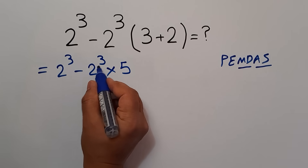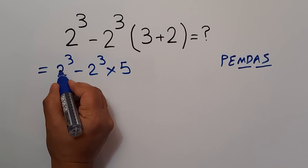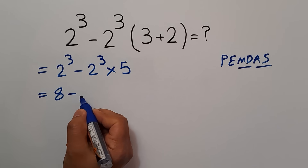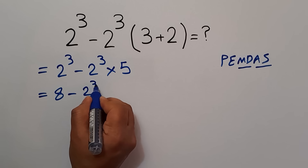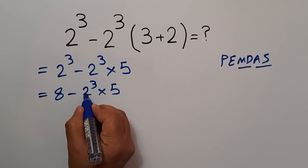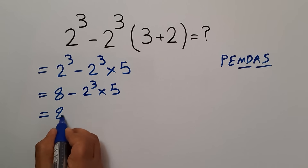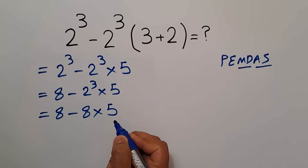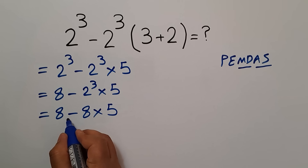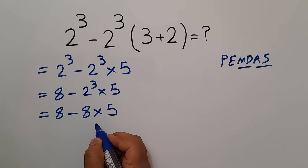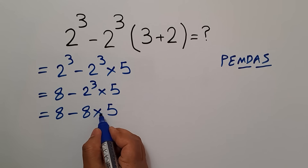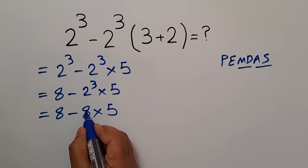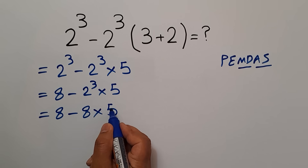In this expression we have 2 exponents, 1 subtraction, and 1 multiplication. According to PEMDAS, first we handle exponents: 2 cubed gives us 8, so 8 minus 2 cubed times 5. Again 2 cubed gives us 8, so 8 minus 8 times 5. Now we have 1 subtraction and 1 multiplication.